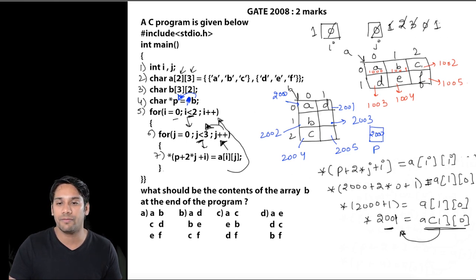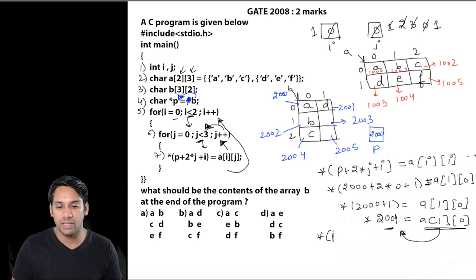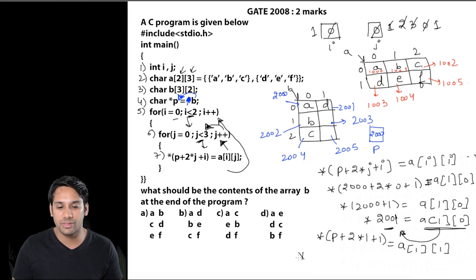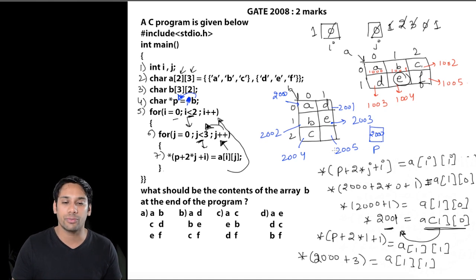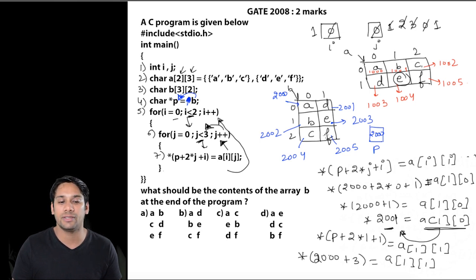We increment j to 1. Line 7 becomes: *(P + 2*1 + 1) = A[1][1], that is *(2003) = A[1][1]. So at location 2003 we store E. One more iteration stores F at 2005. Now the content of array P (in address order 2000–2005) is: A, D, B, E, C, F. So option P is correct.